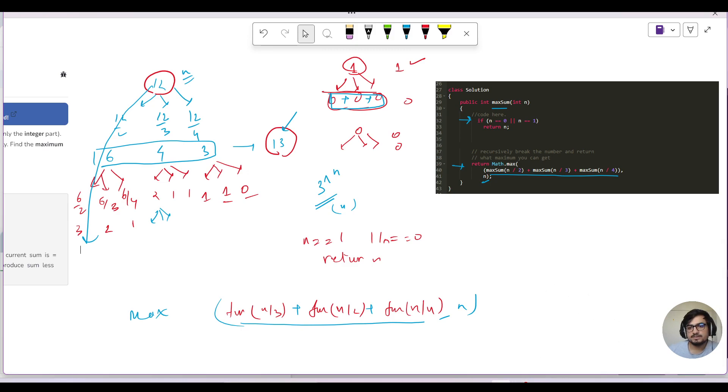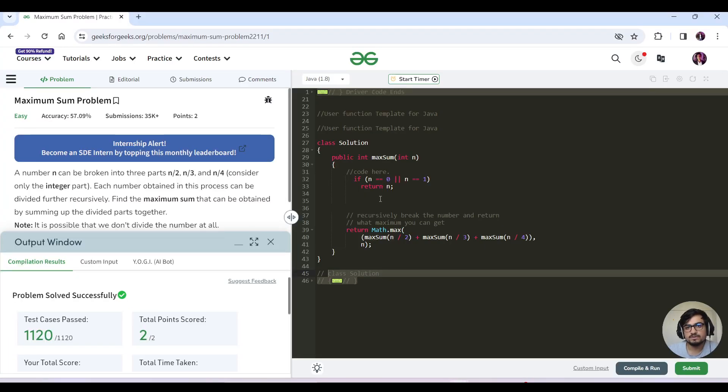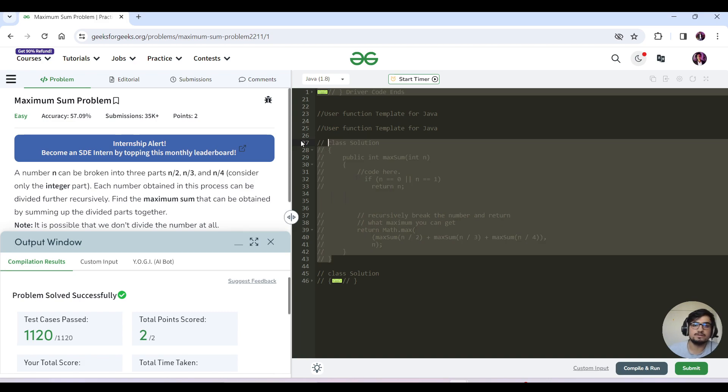Great. How we can memorize this approach using dynamic programming? So what are the states? Identify the states that are changing. So every time n is only changing. So we'll make a dp array of size n plus 1. And for n equals to 0 and n equals to 1, we return n. So we will mark dp as 0, dp as 1. And for the rest of the cases, we'll just say dp of i is nothing but dp of i by 2 plus dp of i by 3 plus dp of i by 4, comma maximum with i. And that is it. Please pause this video, try to code this approach by yourself, and then we can see the exact code in action.